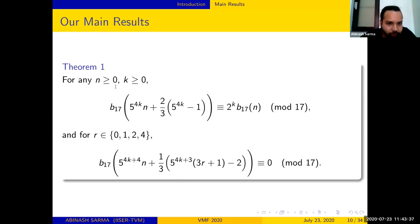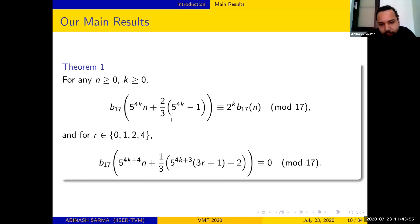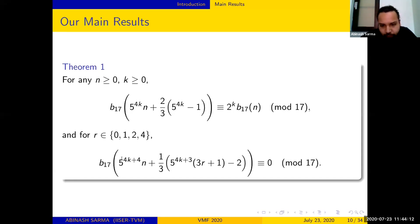The first theorem states: for any non-negative integers n and k, if the integer is of a certain specific form, then the number of 17-regular partitions satisfies a recurrence congruence relation mod 17. Specifically, b_17 of that integer is congruent to 2^k times b_17(n). Furthermore, if r takes one of four specific values, we get 17-divisibility — the number of 17-regular partitions of integers of that form is divisible by 17. Note this is a sufficient condition.